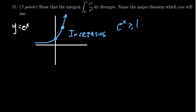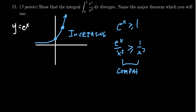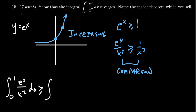Why that is useful is that if you divide everything by x squared, you're going to get e to the x divided by x squared, which is a positive expression, is greater than or equal to 1 over x squared. So we have a comparison between two functions — one function is greater than the other. Therefore, the integral from 0 to 1 of e to the x over x squared dx will be greater than or equal to the integral from 0 to 1 of 1 over x squared dx.